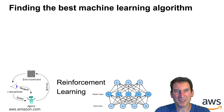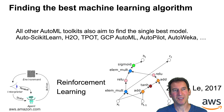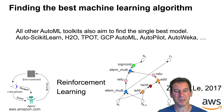And lo and behold, somebody's done that too — again with deep networks — ending up with this rather bespoke construction as a recurrent cell. Now, all other AutoML toolkits really also aim at finding the best single model: whether it be AutoSkLearn, HTL, TPOT, GCP AutoML, AutoPilot, or AutoWEKA — they all try to find the single best object.